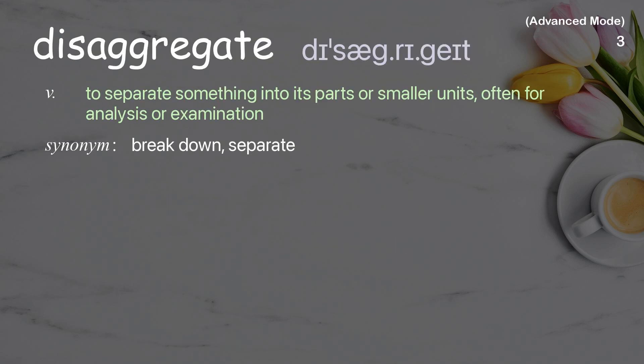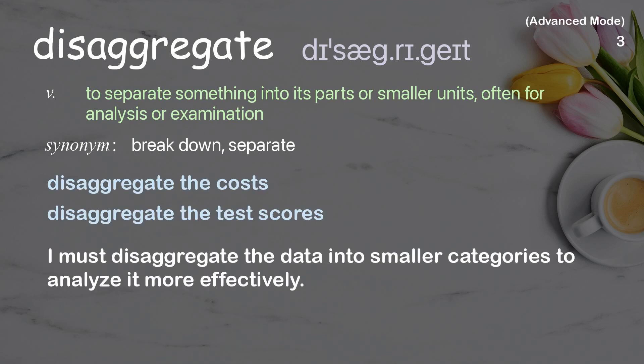Disaggregate: to separate something into its parts or smaller units, often for analysis or examination. Examples: disaggregate the costs, disaggregate the test scores. I must disaggregate the data into smaller categories to analyze it more effectively.